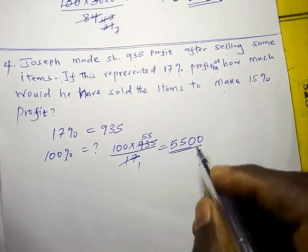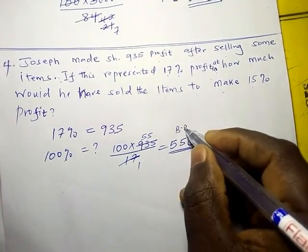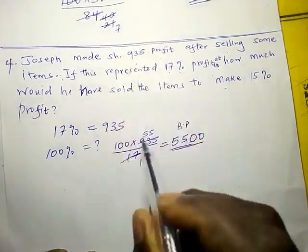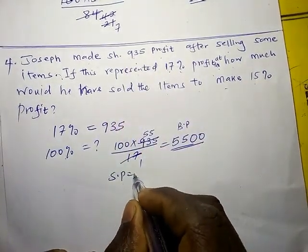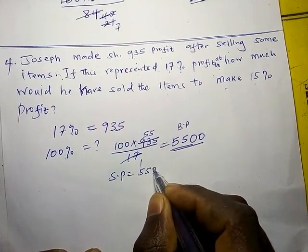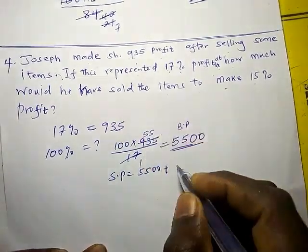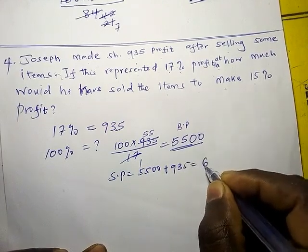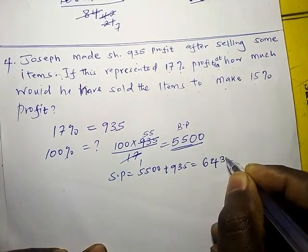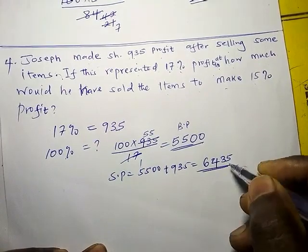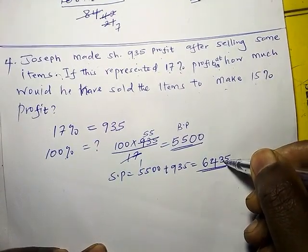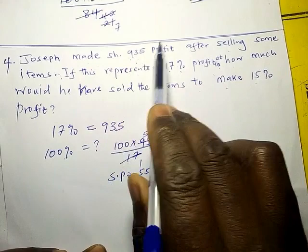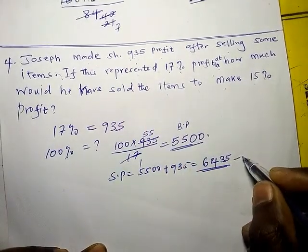So the buying price is 5500 shillings. For him to make a profit of 935, the selling price is 5500 plus 935, which gives 6435 shillings. This is the amount Joseph sold for to get a profit of 935, where 5500 is the buying price and 6435 is the selling price.